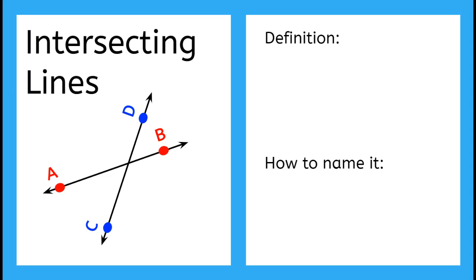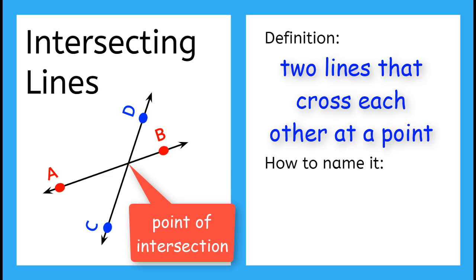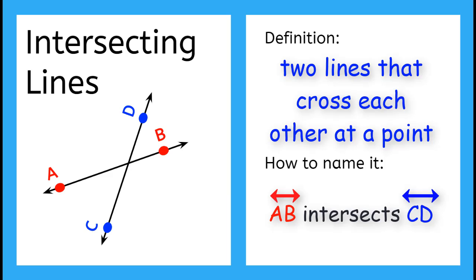Intersecting lines are two lines that cross each other at a point. The point where they cross is called the point of intersection. We would name this intersection with the names of both lines. So line AB is intersecting line CD.